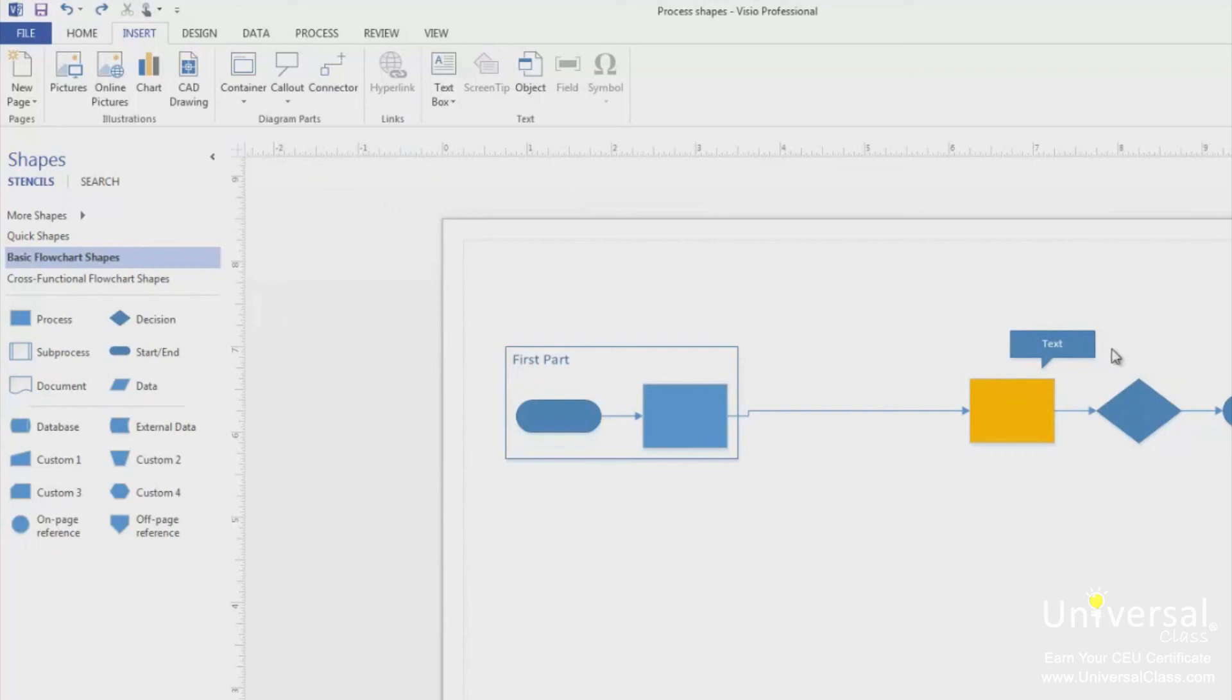You can add a callout to your page without selecting a shape. When you do this, the callout appears in the middle of your current view. Let's do this by inserting a new callout.